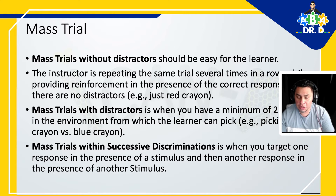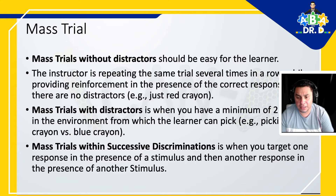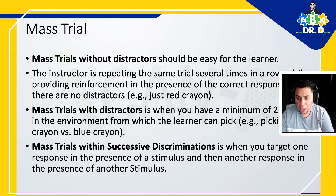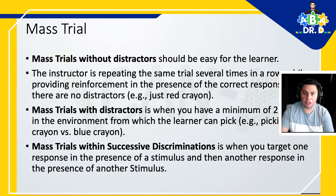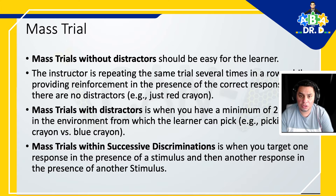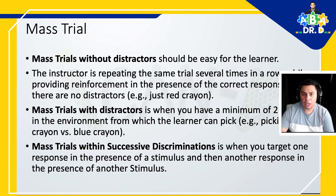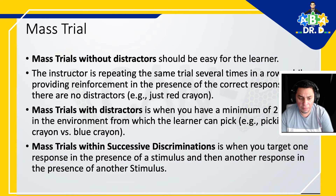You could also implement mass trial with distractors, where you're now implementing a minimum of two items in the environment. For example, you're still targeting the red crayon but now you're adding a blue crayon in the environment and saying 'touch red crayon,' and that's where the client would touch the red crayon.